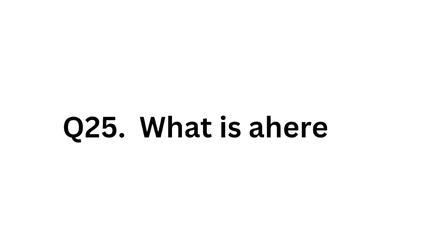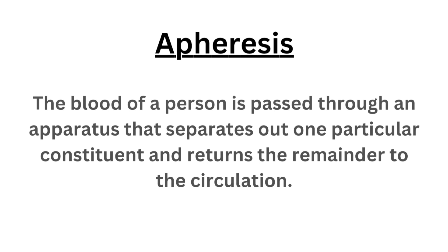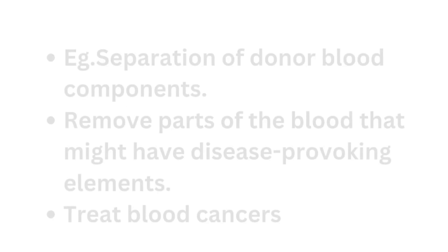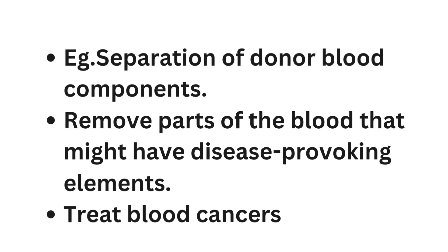Question number 26: What is apheresis? The process in which the blood of a person is passed through an apparatus that separates out one particular constituent and returns the remainder to the circulation is called apheresis. Some examples of apheresis are: separation of donor blood components, removal of parts of the blood that might have disease-provoking elements, and treating blood cancers.